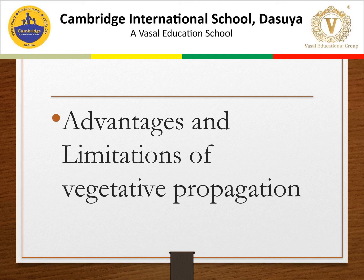Advantages of vegetative propagation: it is a cheaper, rapid, and convenient method. For example, potatoes take only 3 months to produce a new crop when raised from tubers, whereas 15 months are needed from seeds. Plants like banana and grapes do not form viable seeds and can be grown only by vegetative propagation. Desirable characters of fruits and flowers can be maintained indefinitely. Plants grown by vegetative propagation are of uniform size, quality, and taste. Survival rate of new plants is 100%, versus about 10% when raised from seeds. Limitations: it does not produce new varieties, leads to overcrowding around the main plant creating competition for food and space, plants lose vigor when grown repeatedly, undesirable characters are transmitted from generation to generation, and diseases contracted by parent plants are also transmitted to daughter plants.